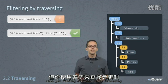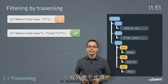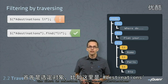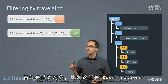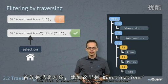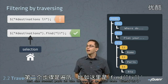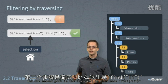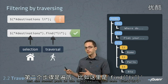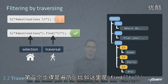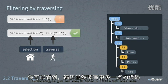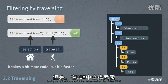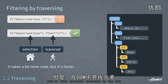When you're finding elements using traversing, it typically has two parts. The first is a selection — in this case pound destinations — and the second part is the traversal — in this case find li. Traversing takes a little bit more code, but to find specific elements in the DOM, it's a little bit faster.